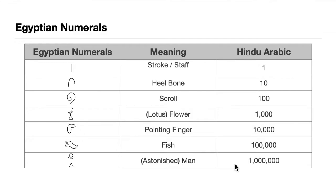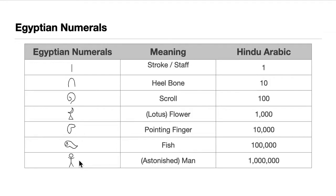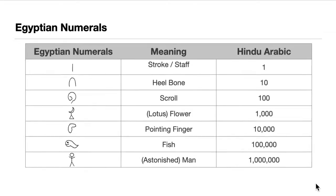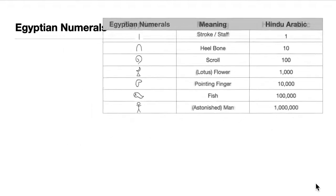Finally, we have the man — also called the astonished man — which is equivalent to 1,000,000. For example, if we write the stroke five times that equals 5; if we write the flower six times that equals 6,000; and if we write the man nine times that equals 9,000,000.